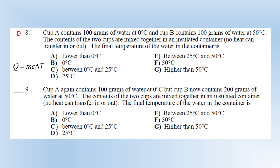Now changing the scenario: cup A with 100 grams at 0 degrees, cup B with 200 grams at 50 degrees - mixed in an insulating container. The two materials lose and gain the same amount of energy. The 200 grams loses the same energy as the 100 grams gains, but because B has double the mass, its temperature change only needs to be half that of cup A. That's why the final temperature ends up above 25 degrees.